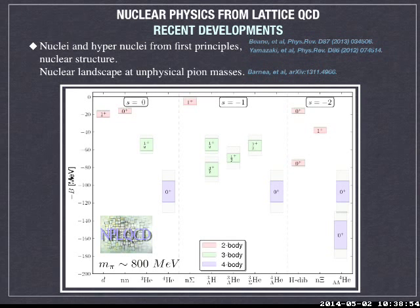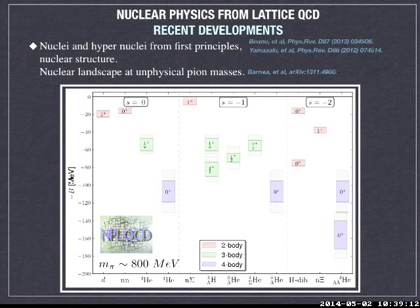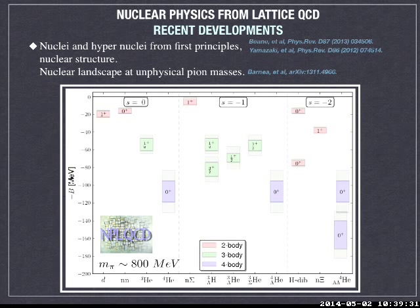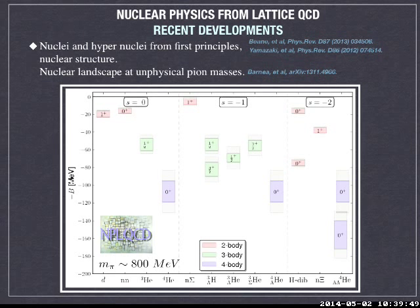This is a proof of principle that, as soon as you have enough computational resources, you can basically nail down the spectrum at the physical point as well. Regarding whether these calculations are done in one run: you create one set of gauge field configurations at a given volume — there have been three different volumes, so three different configurations. When you have those gauge field configurations, you can make interpolating operators for two-body, three-body, four-body, and so on, then get correlation functions and look at the time evolution of those correlation functions. These are basically part of long calculations.